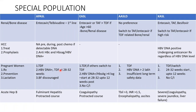For pregnant patients, Tenofovir is the safest drug — all guidelines recommend Tenofovir. To prevent mother-to-child transmission — since higher viral load means higher transmission — we check DNA levels at 28 to 32 weeks (third trimester). If DNA is positive, we start Tenofovir at 28 to 32 weeks and continue up to 12 weeks postpartum. Regarding lactation, guidelines are not very clear — some say it should be discouraged, others say there is no contraindication.